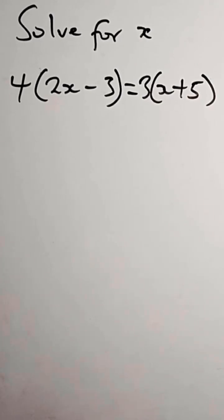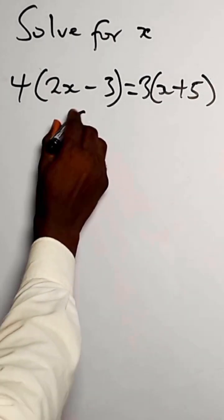Solve for x in this equation. We have 4 into 2x minus 3 equals 3 into x plus 5. How do we do this solution?